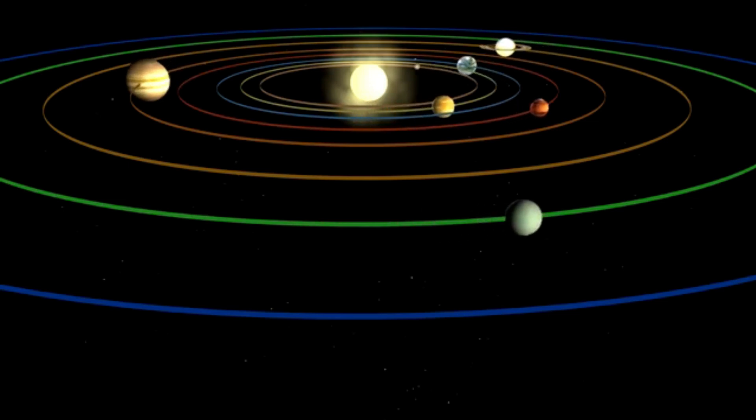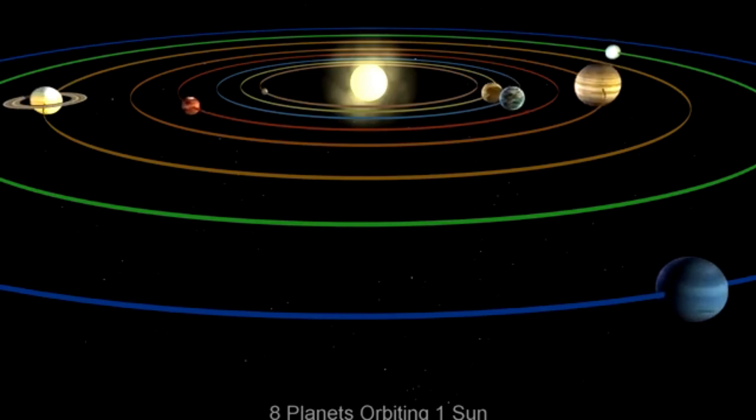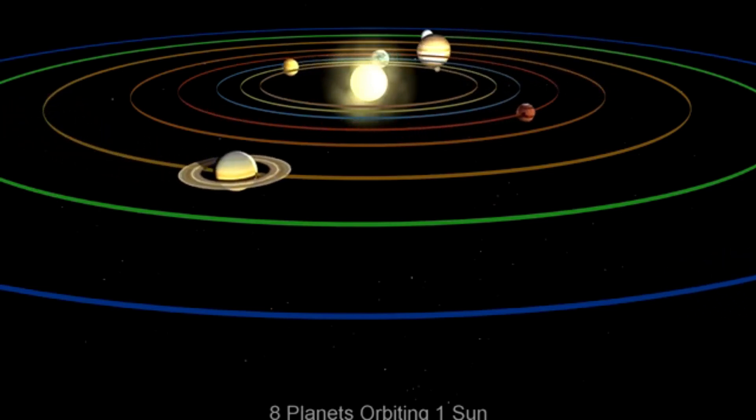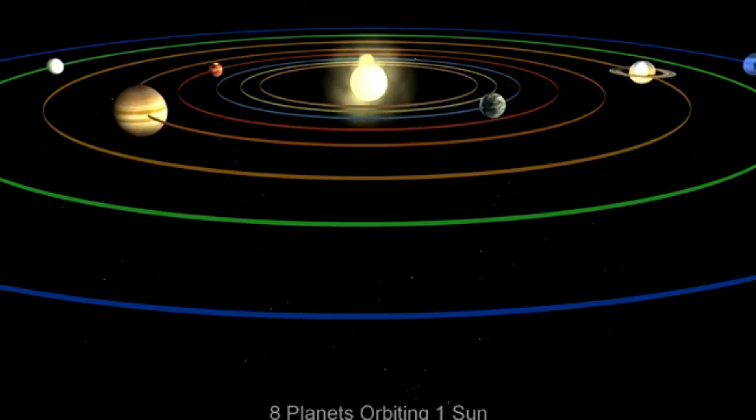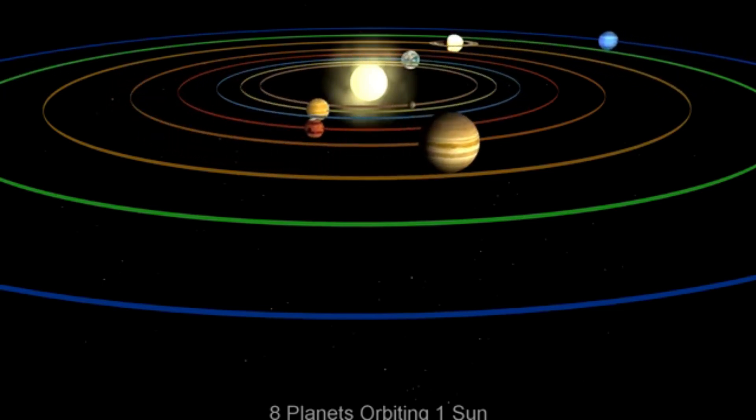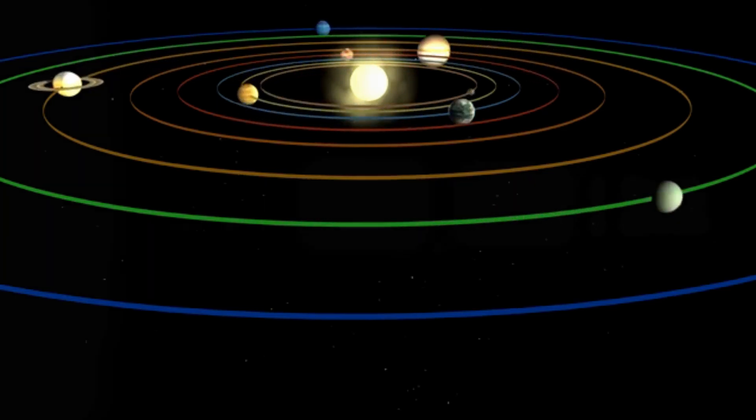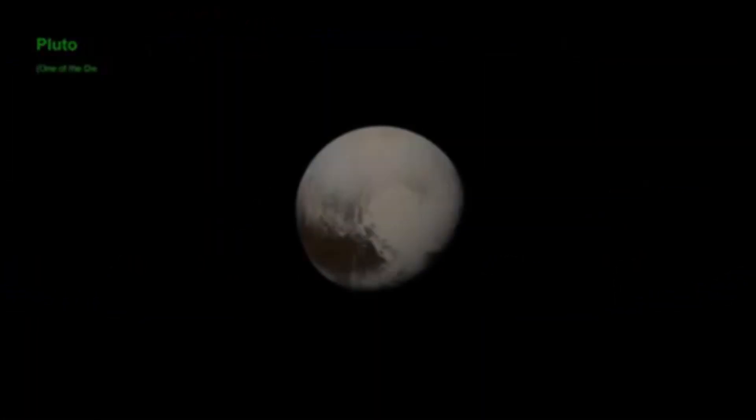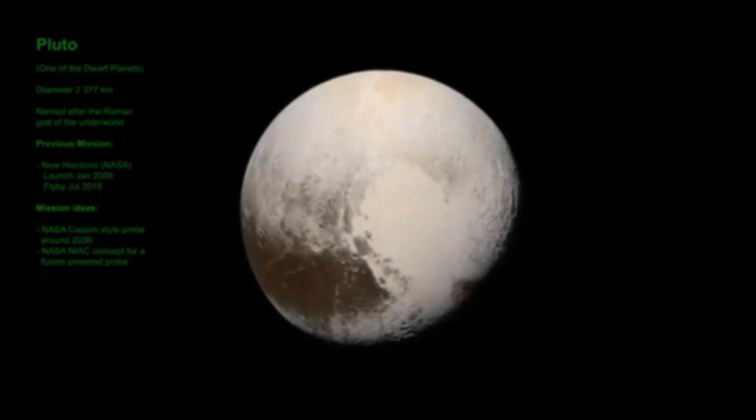Along with the Sun there are eight planets. Previously there were nine planets but now only eight planets. The ninth planet Pluto is not considered as a planet presently. Why? Because planet Pluto is not revolving around the Sun in its own orbit. It is coming out of the orbit. That's why Pluto is not considered as a planet presently but it is now called as a dwarf planet.